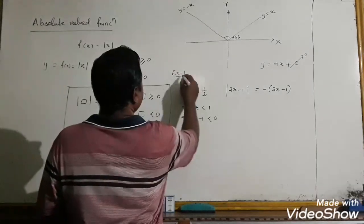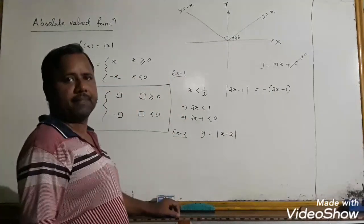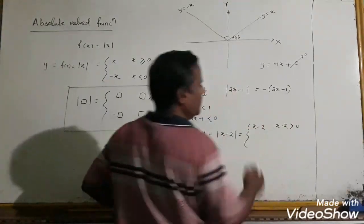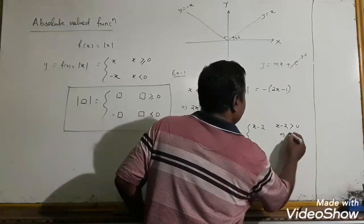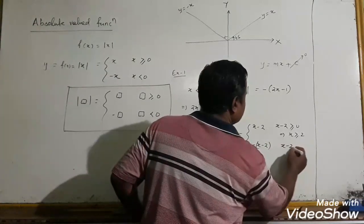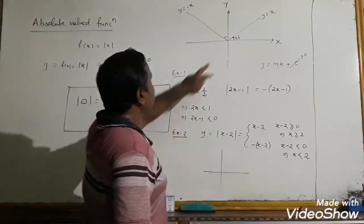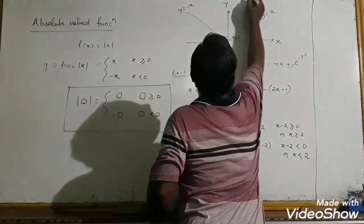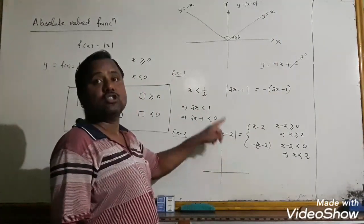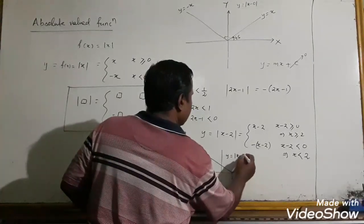Next, example 2: suppose we graph y = |x − 2|. When x − 2 ≥ 0, that is x ≥ 2, it equals x − 2. When x − 2 < 0, that is x < 2, it equals −(x − 2). The graph is a V-shape with the vertex at x = 2.